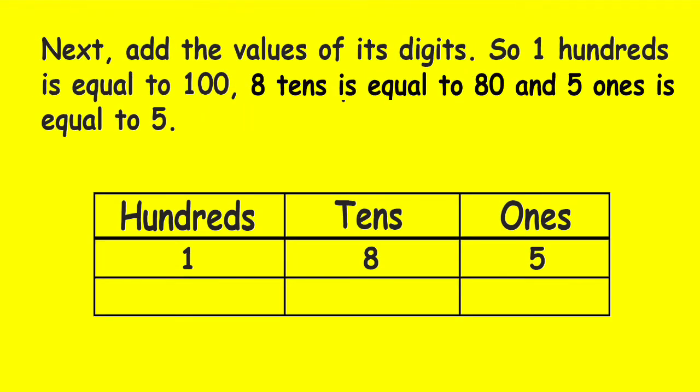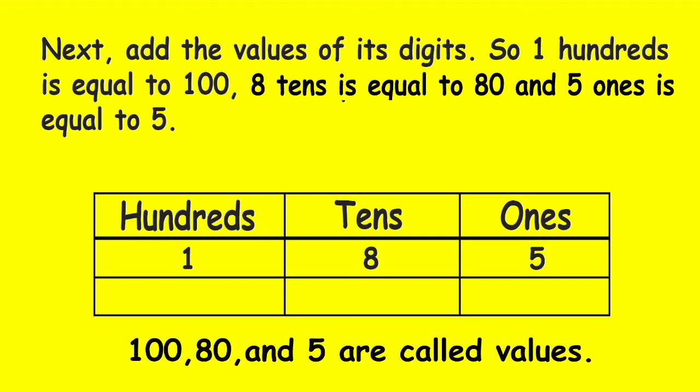Next, add the values of each digits. So, 1 hundred is equal to 100, 8 tens is equal to 80, and 5 ones is equal to 5.